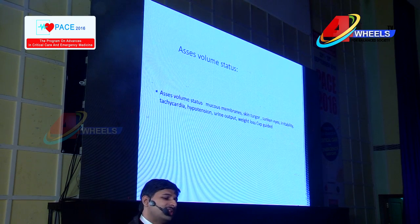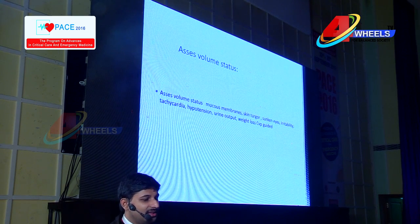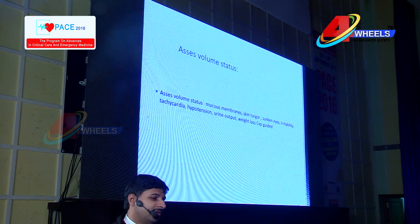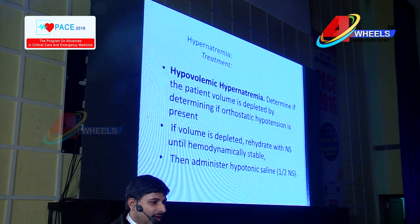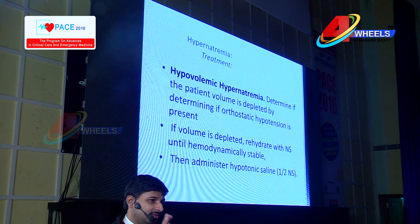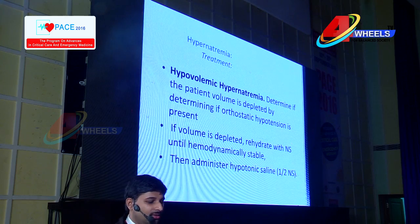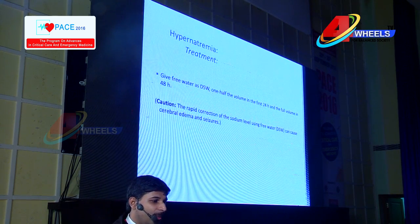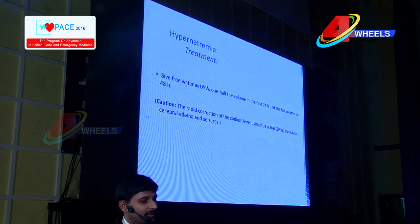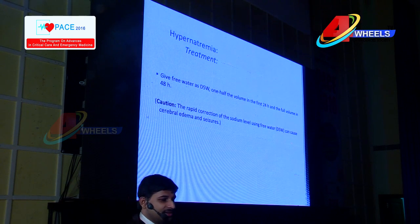Always assess volume status — mucus membranes, skin turgor, shrunken eyes, irritability, tachycardia, and hypotension — as well as urine output and weight loss, which is CVP-guided in the ICU. For hypernatremia correction: always give volume and rehydrate with NS if dehydrated, then go to half NS (0.45% NS). Give free water as D5W — half the volume in the first 24 hours and the full volume in 48 hours. Don't rapidly correct as it will cause cerebral edema and seizures.